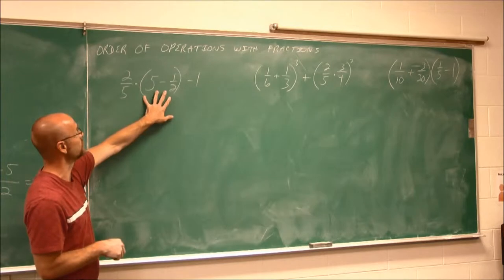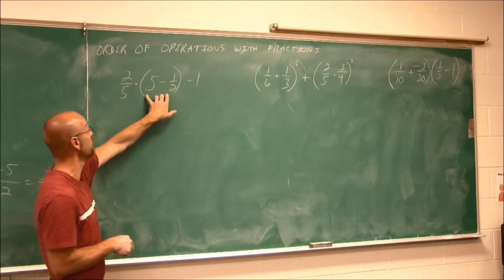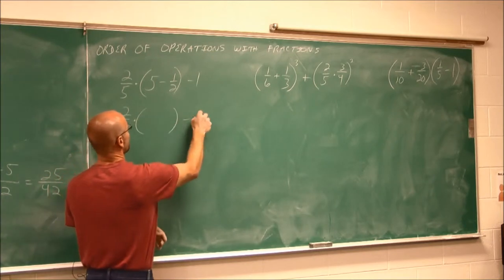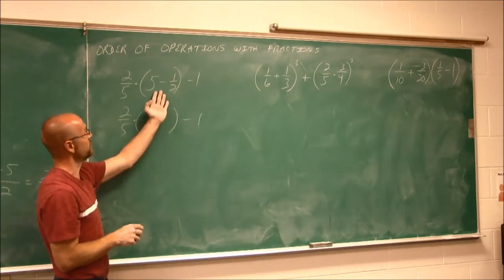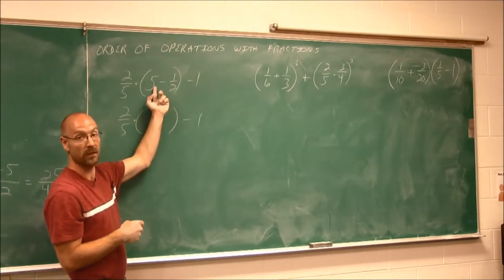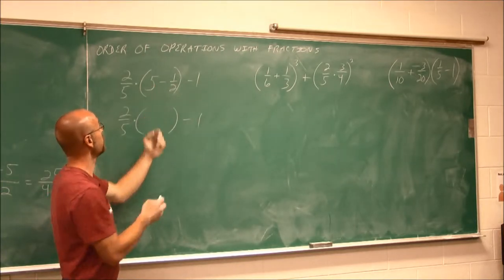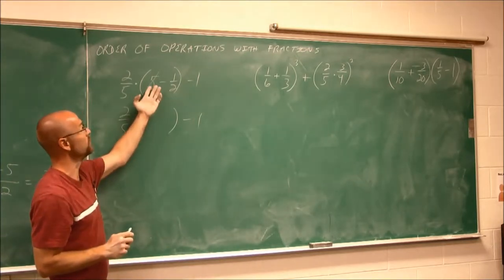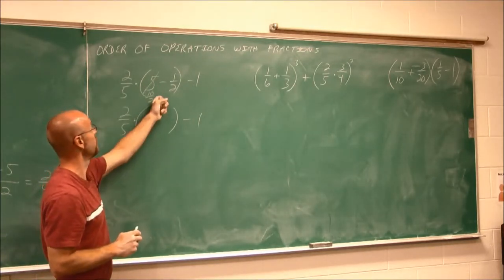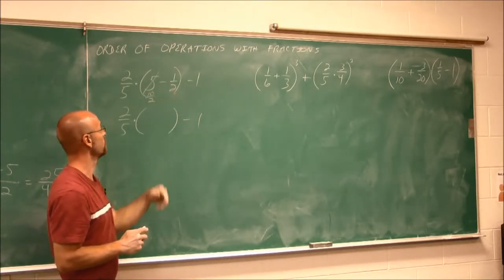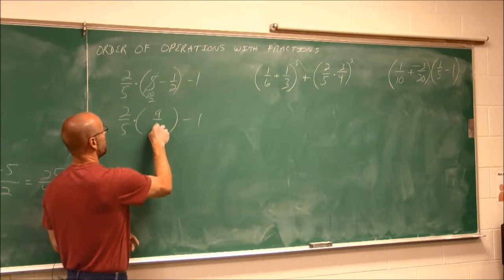Our first example here, we have 2 fifths times the quantity 5 minus 1 half minus 1. The first thing I notice is there's grouping symbols, so I'm going to work within these parentheses. Within these parentheses, I say 5 minus 1 half. Well, I have to have a common denominator. So I'm going to write this as 10 halves. 10 divided by 2 is the same thing as 5. So now they have a common denominator.